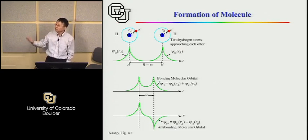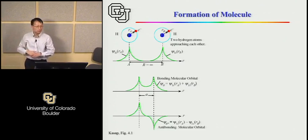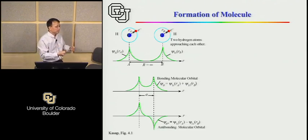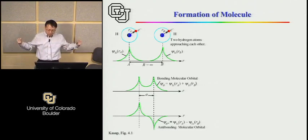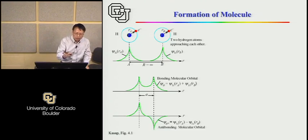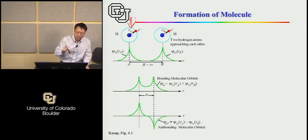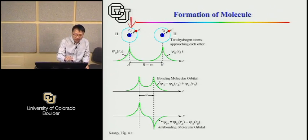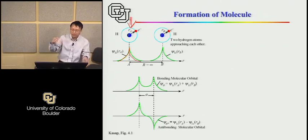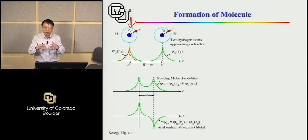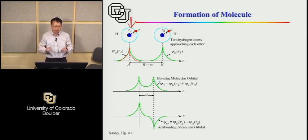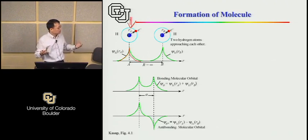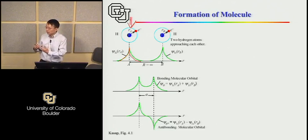Now let's make a molecule. We're eventually going to get to silicon, but let's start with the simplest possible molecule — a diatomic molecule, two atoms. Two hydrogen atoms — the smallest atom. If you bring them together, these individual hydrogen atoms each have one proton and one electron orbiting around it, and their wave function kind of looks like this — highest amplitude near the proton and exponentially decaying away. That's the general shape of the electronic wave as a function of the radial coordinate.